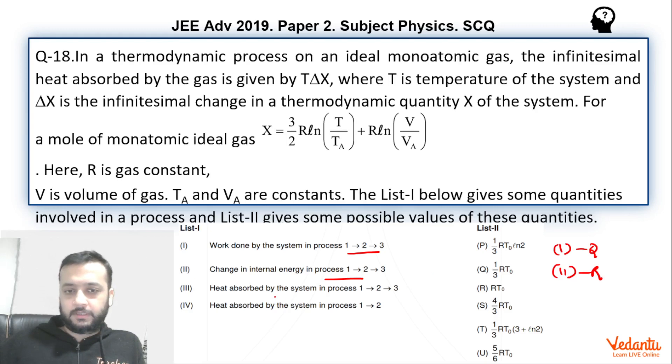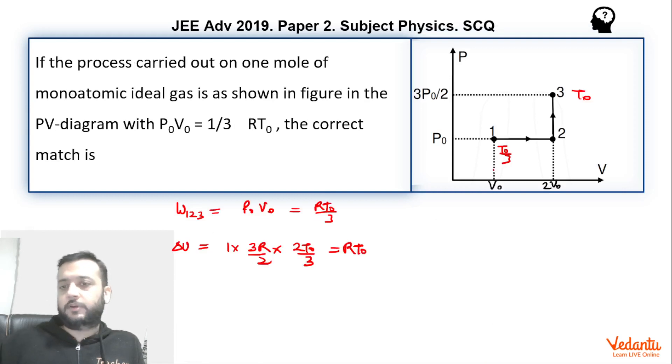For the third option, heat absorbed by the system will be in the process 1, 2, 3. So heat absorbed means we have to find Q12 and Q23. Now Q12 is fairly simple. We can say n Cp delta T. And Q23 will be n Cv delta T.